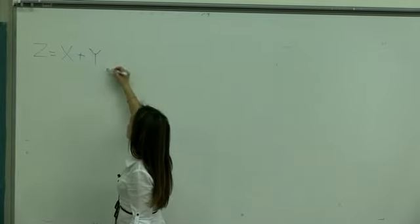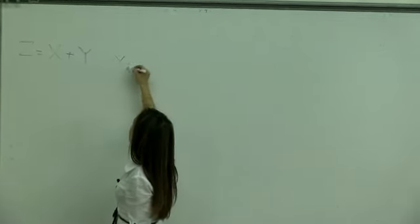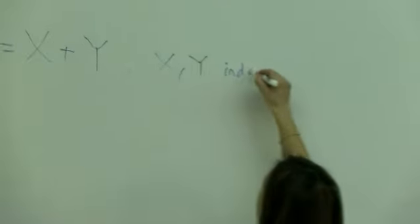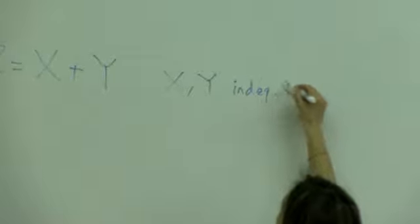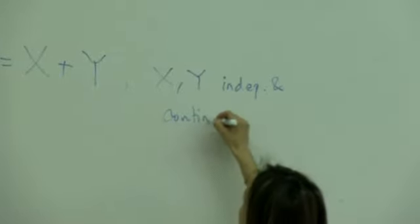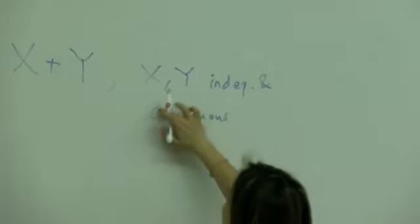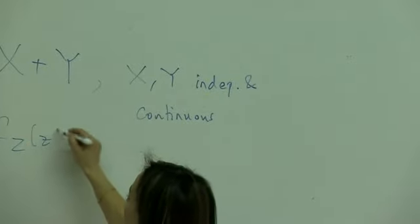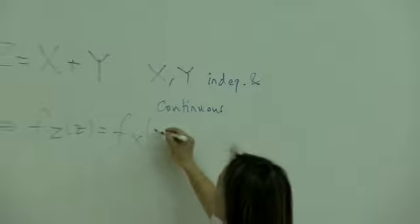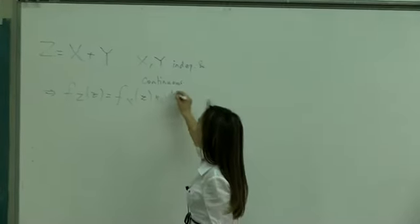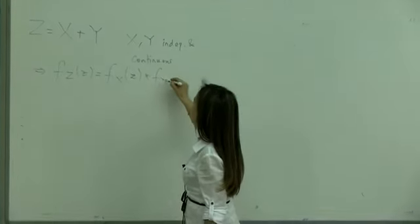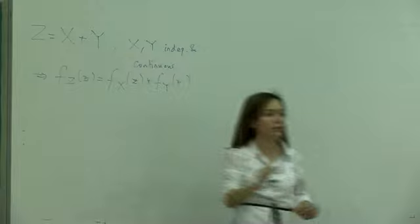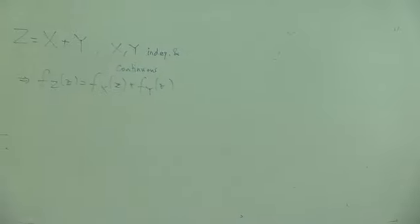So z is x plus y, where x and y are independent and continuous. Then we have that fz of z equals fx of z convolved by fy of z. Now let's use this in a very important example.